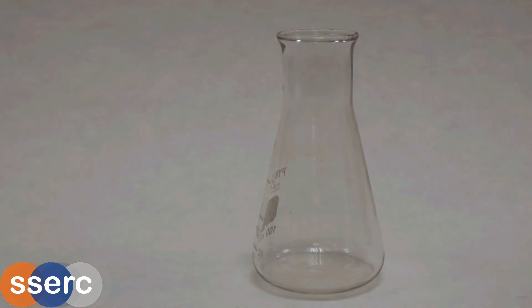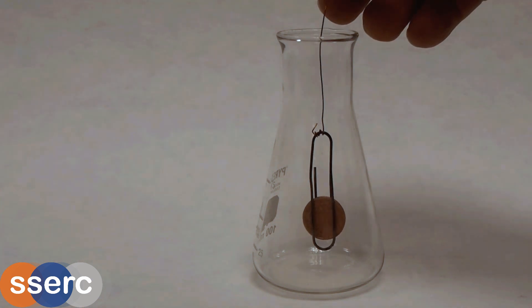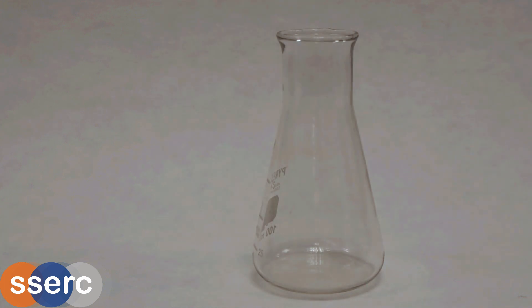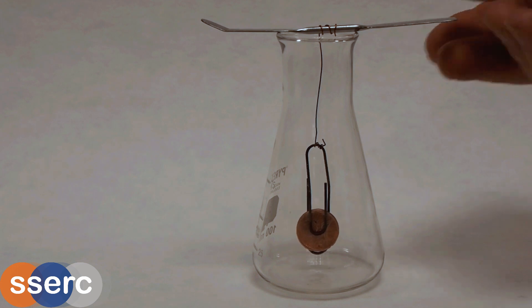You will need a small beaker or flask and you'll need to find some way of being able to dangle your coin just above the surface of the liquid. Here I am using a cradle made using a paper clip. This is then tied to a metal spatula with some wire and the length adjusted so it will dangle freely just above the liquid.